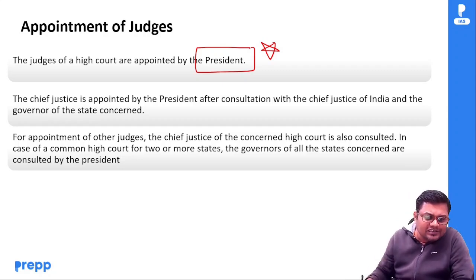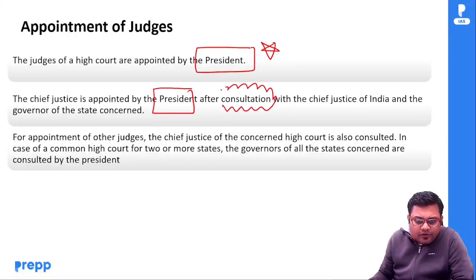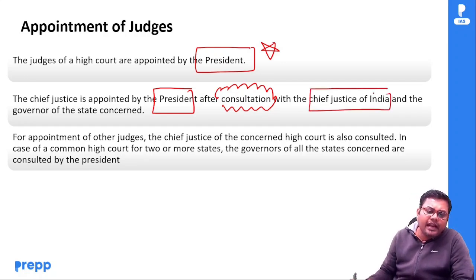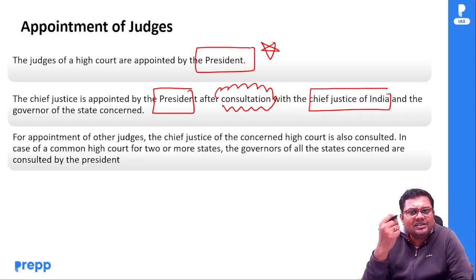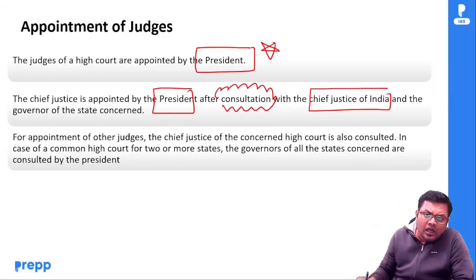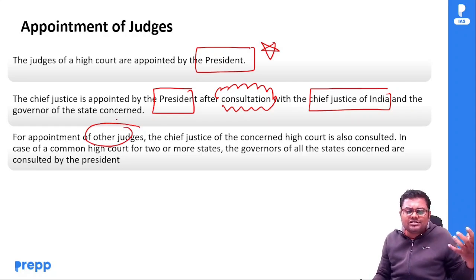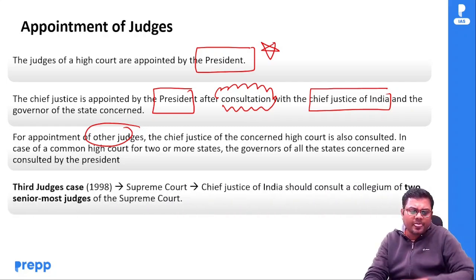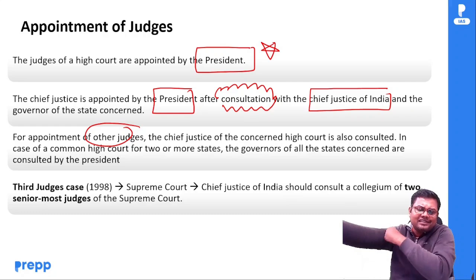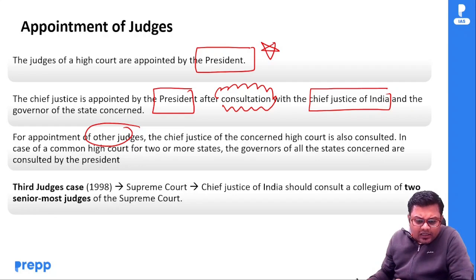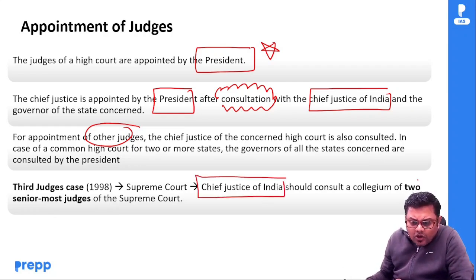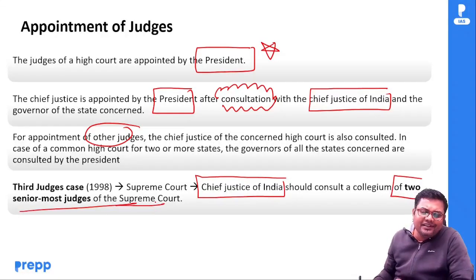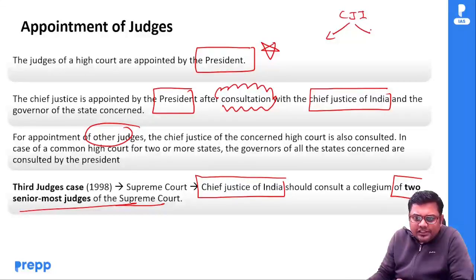Chief Justice of High Court is appointed by President after consultation with Chief Justice of India (CJI) and Governor of state। अगर दूसरे judges को appoint करना है, तो उस High Court के Chief Justice से भी consult करोगे। अगर common High Court है तो वहाँ के Governor से consult करोगे। तो ये constitutional provision है। But होता क्या है — Collegium system। Third Judges Case 1998 में Supreme Court ने कहा कि CJI should consult with collegium of two senior most judges of Supreme Court।